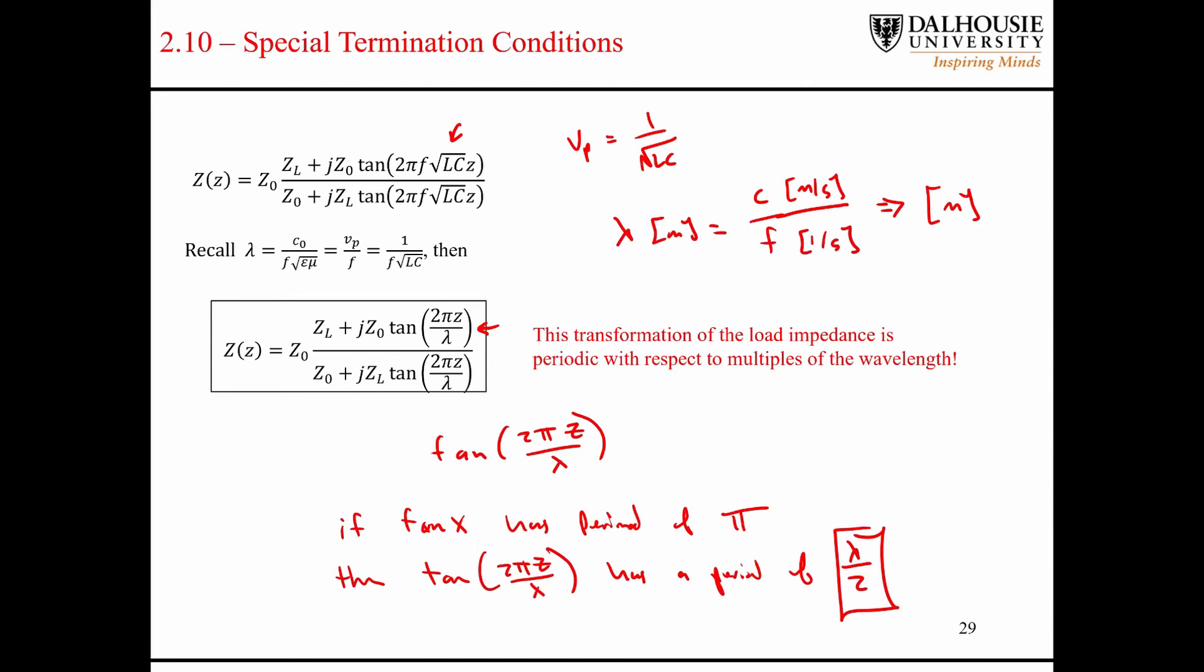So there's some special kind of fractions of wavelengths when it comes to RF engineering. One of them is half a wavelength, the other one is a quarter of a wavelength. But we'll talk about that later. Just remember that the period of this expression for the impedance is lambda over 2.